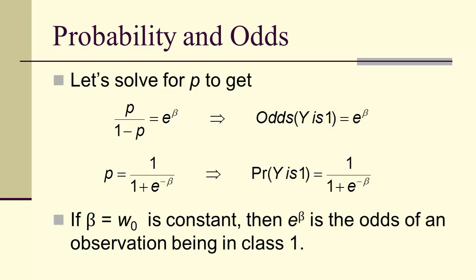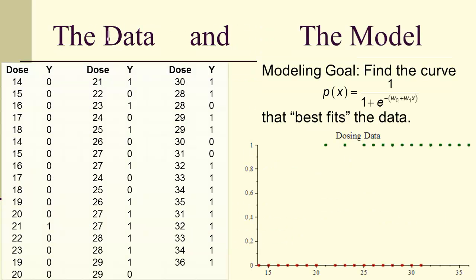Now if beta is constant, then e to the beta is just the odds of an observation being in class 1. But our goal is to look at a model where beta is w0 plus w1 times x.